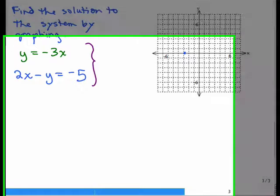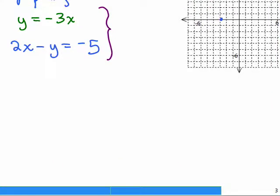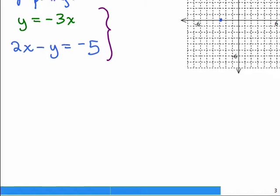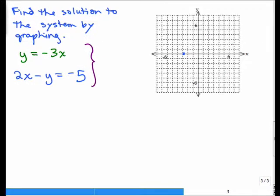Okay. Let's look at this system. Find the solution to the system by graphing. So we have two lines, y equals negative 3x and 2x minus y equals negative 5. So there are two lines. The first line you need to graph, y equals negative 3x. So put it on pause and graph that on the axis shown here, and then come back and see if you get the same thing I get.